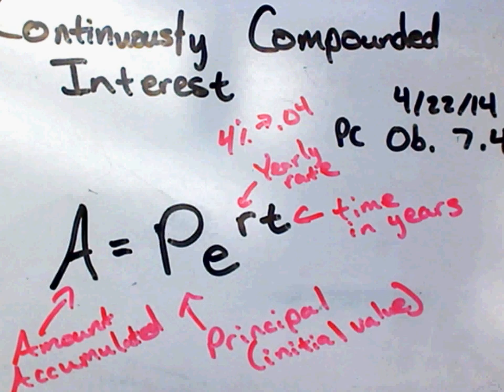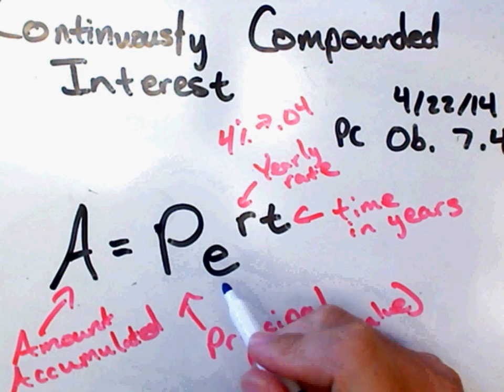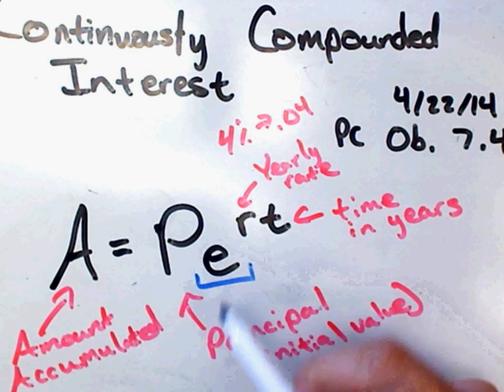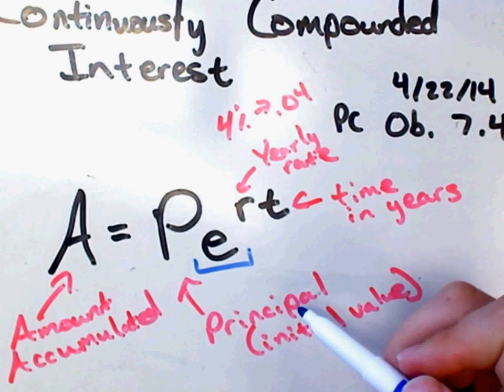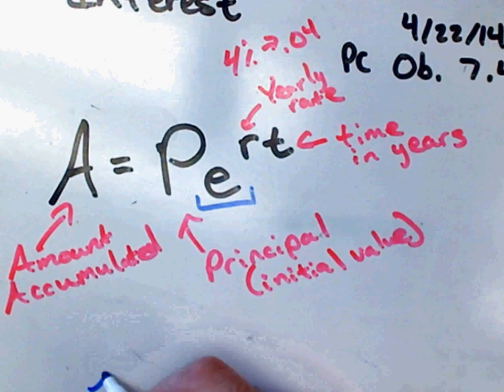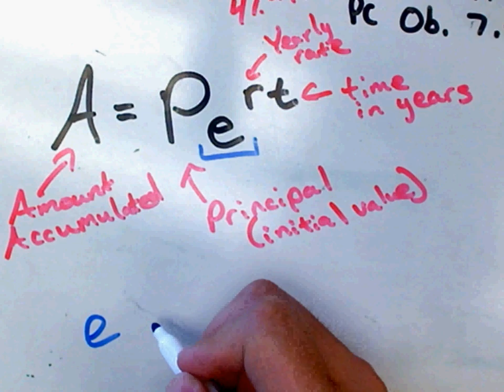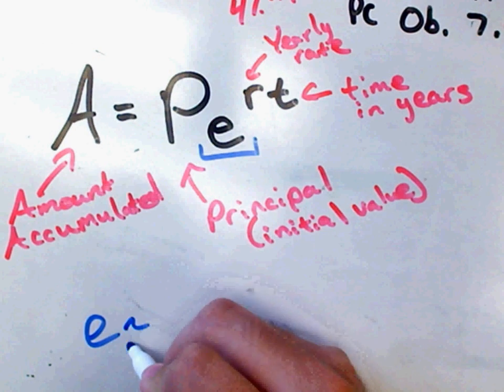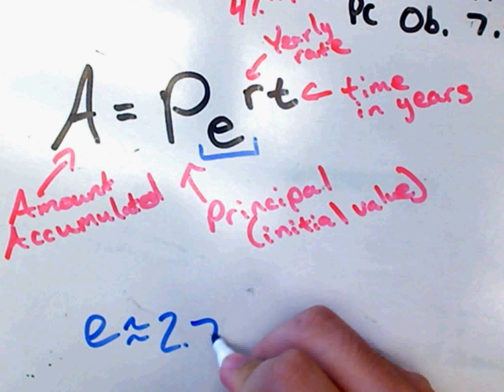The one thing that throws some students off is this E. We need to remember that this E is not a variable. E is a number. So if you're taking E, there is a button on your calculator. And if you were to push E and hit enter, it should give you a number. It's kind of like pi in that it goes on forever.